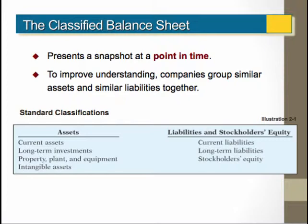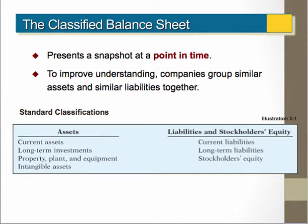Under the assets column, you'll see current assets, long-term investments, property, plant, and equipment, and intangible assets. Current assets are the assets that will be utilized or converted to cash within a year or an operating cycle, whichever is longer. If an asset is not current, it must be long-term. Therefore, long-term means that an asset will be used or converted to cash in greater than a year or an operating cycle.